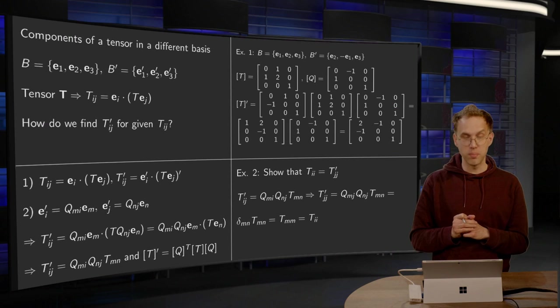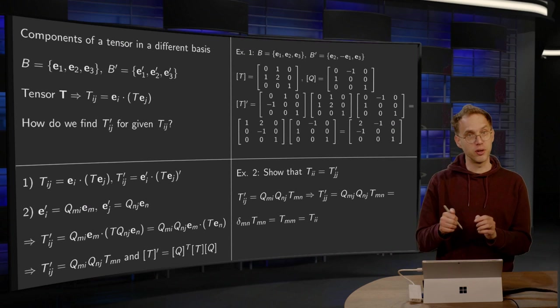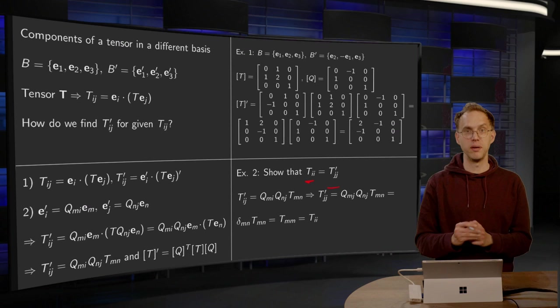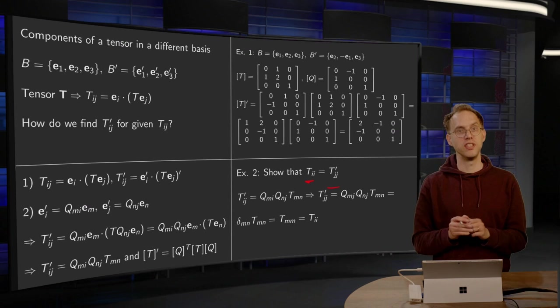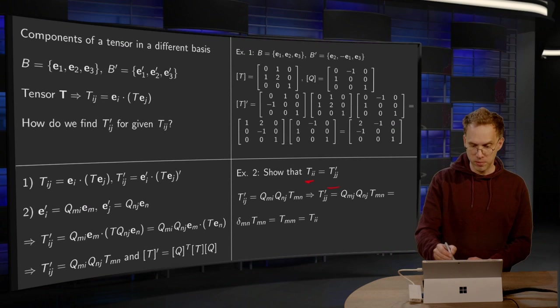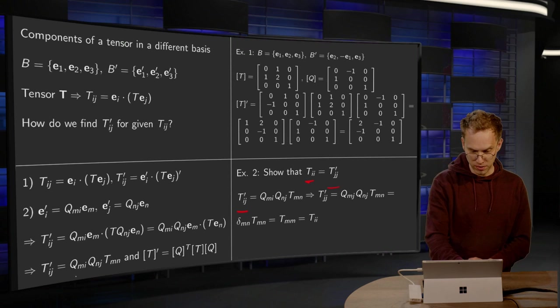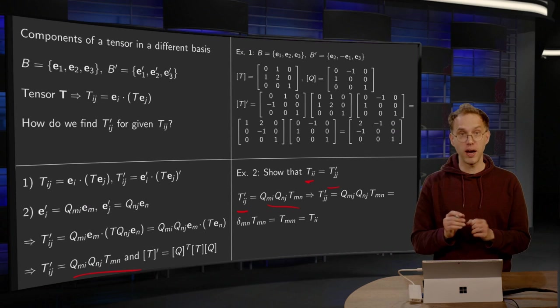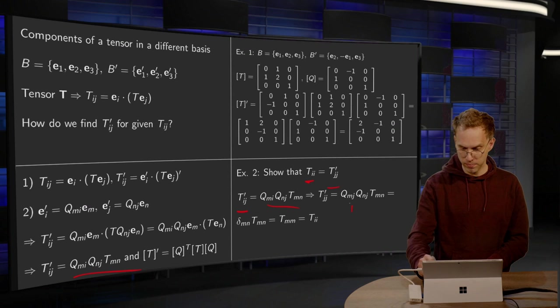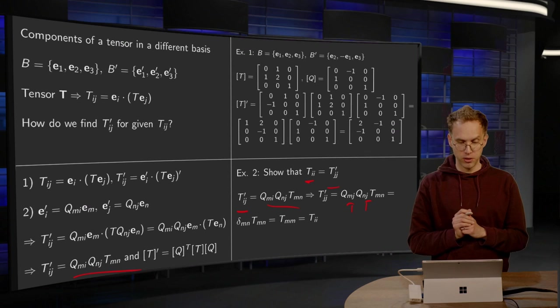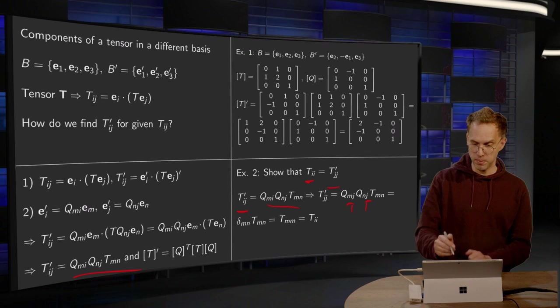So let's go on to a second example. We can even show now that the traces are the same. So I want to show that T_ii equals T'_jj. So the trace of T in one base and the other base are just the same numbers. We know T'_ij in general equals Q_mi·Q_nj·T_mn. So T'_jj, then we have to set i equals j over here, and we keep the T_mn. Now Q_mj·Q_nj, because you have an orthogonal matrix, equals delta_mn.